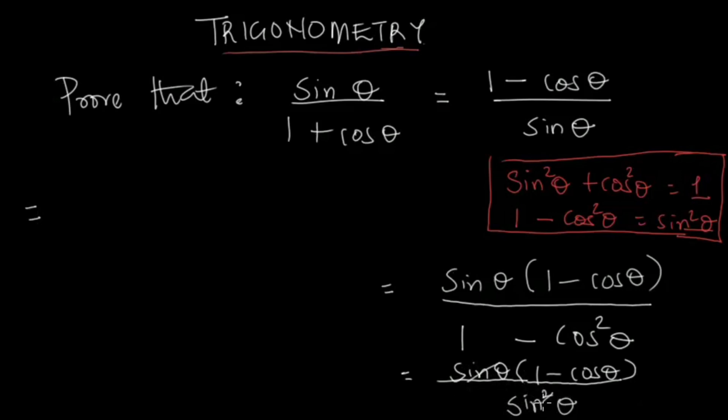We're going to have sin θ in the denominator, so we're going to have 1 minus cos θ all over sin θ, which gives us our answer.